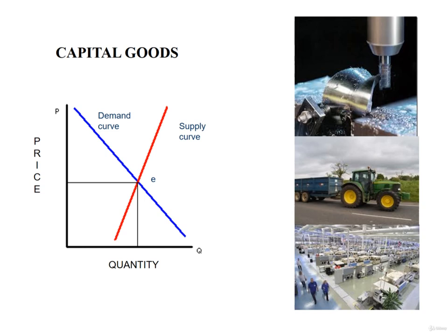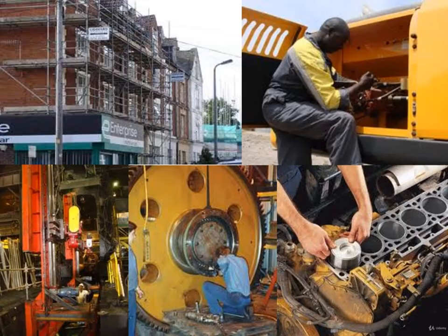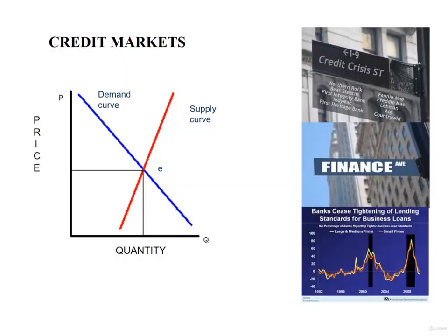The same is true for the markets for capital goods, which are also sensitive to the price mechanism. Equipment, tools, and buildings all depreciate over time and suffer loss in functional utility, as well as in exchange value. Thus, capital goods require a continuous infusion of labor and new capital goods to maintain both use value and exchange value.